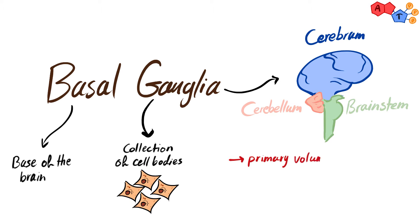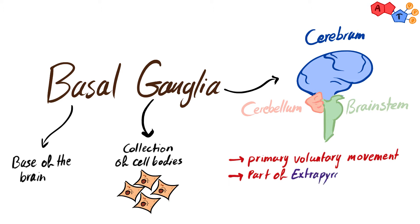The major function of these nuclei is to control the primary voluntary movement of the body. However, the basal ganglia is not considered part of the pyramidal system; instead, it is part of the extrapyramidal system.